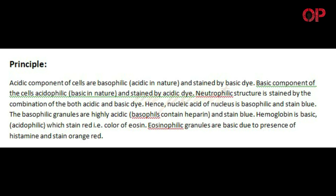Hence, nucleic acid of the nucleus is basophilic and stained blue. The basophilic granules are highly acidic; basophils contain heparin and stained blue. Hemoglobin is basic and acidophilic, which stains red — that is the color of eosin. Eosinophilic granules are basic due to the presence of histamine and stain orange-red.